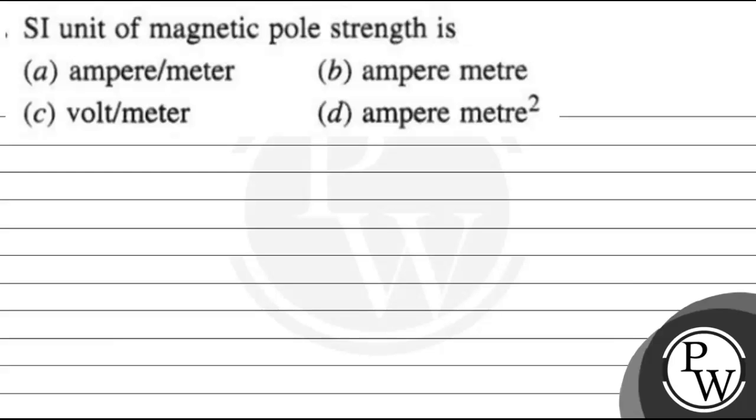Hello, let's read this question. It says SI unit of magnetic pole strength is: first option ampere per meter, second option ampere meter, third option volt per meter, and the fourth option is ampere meter square.